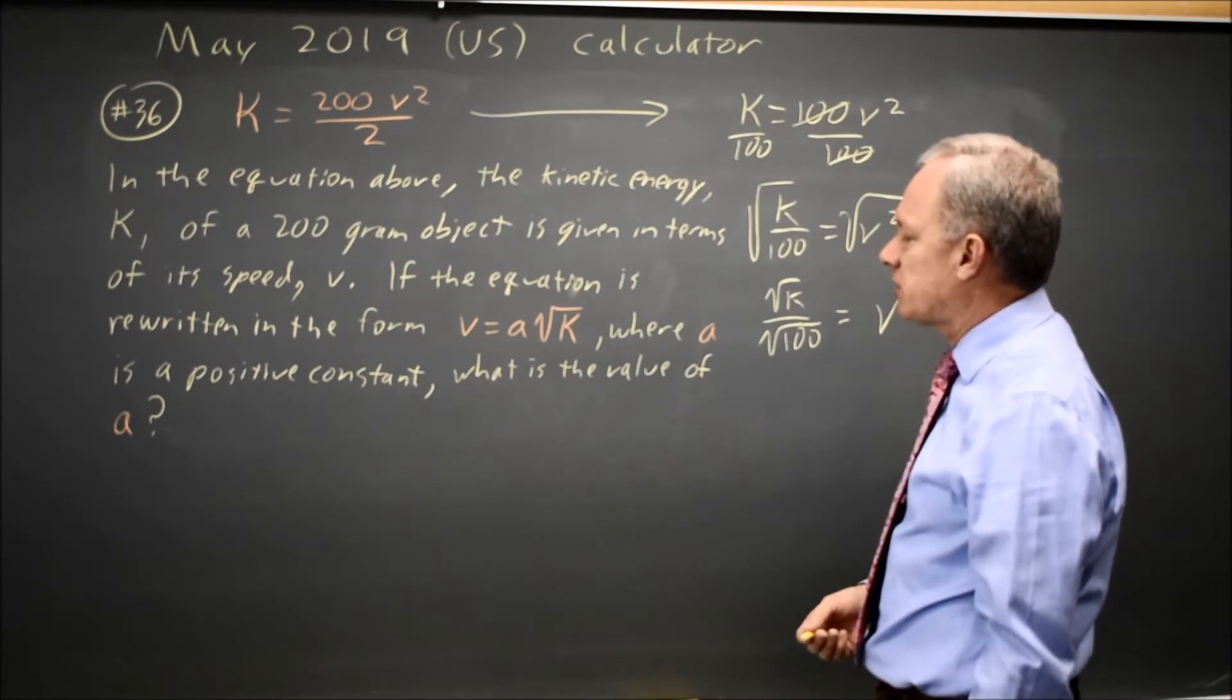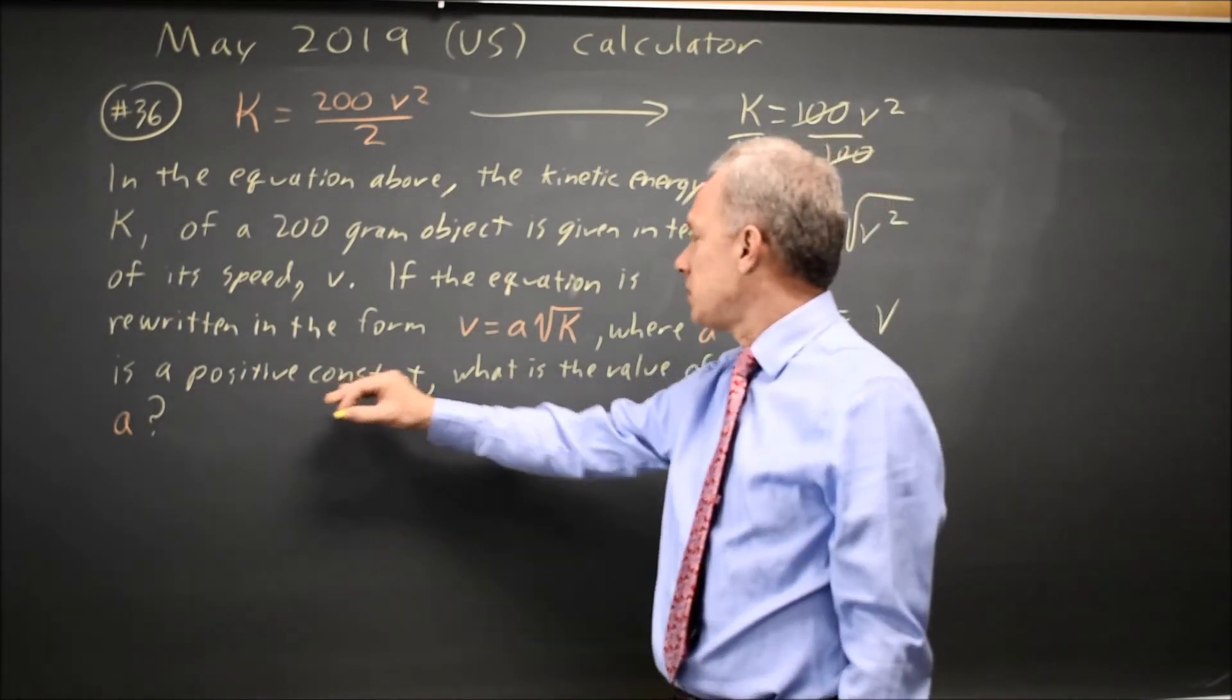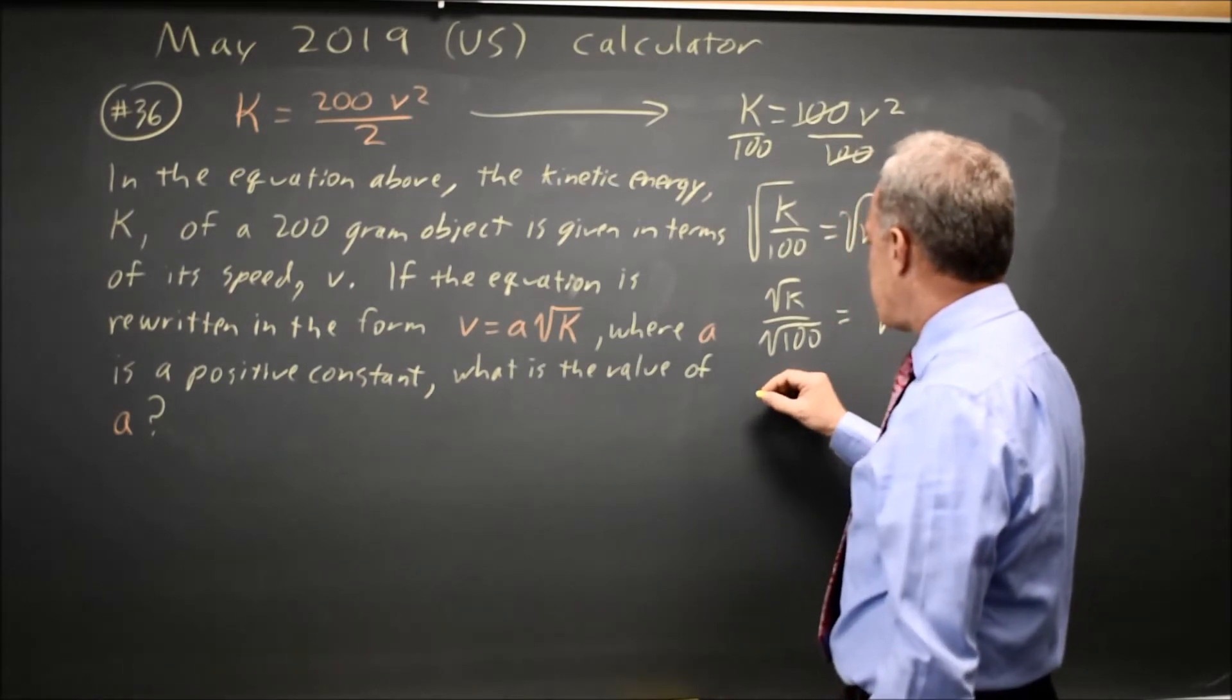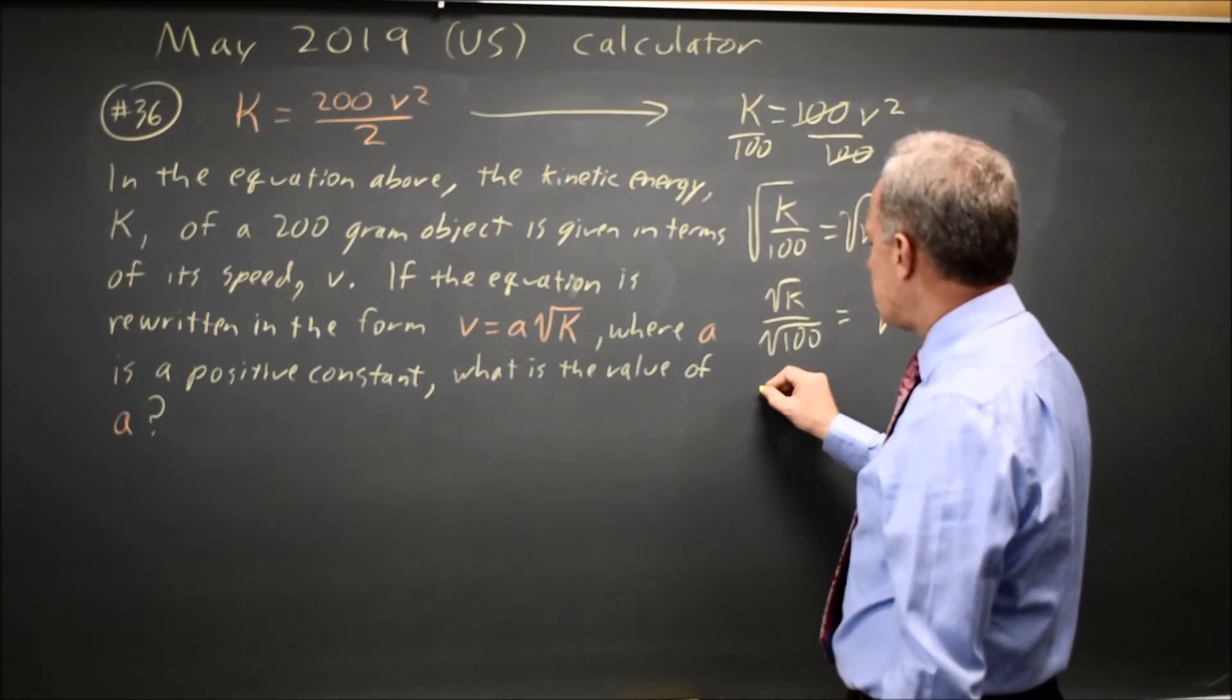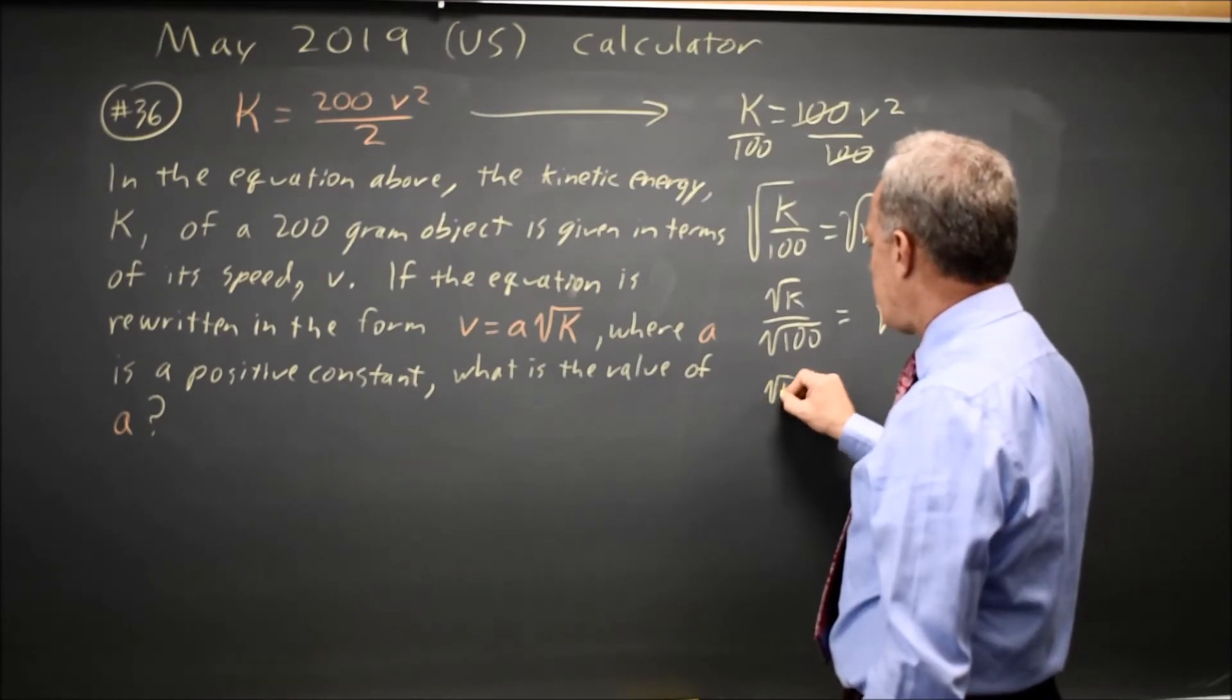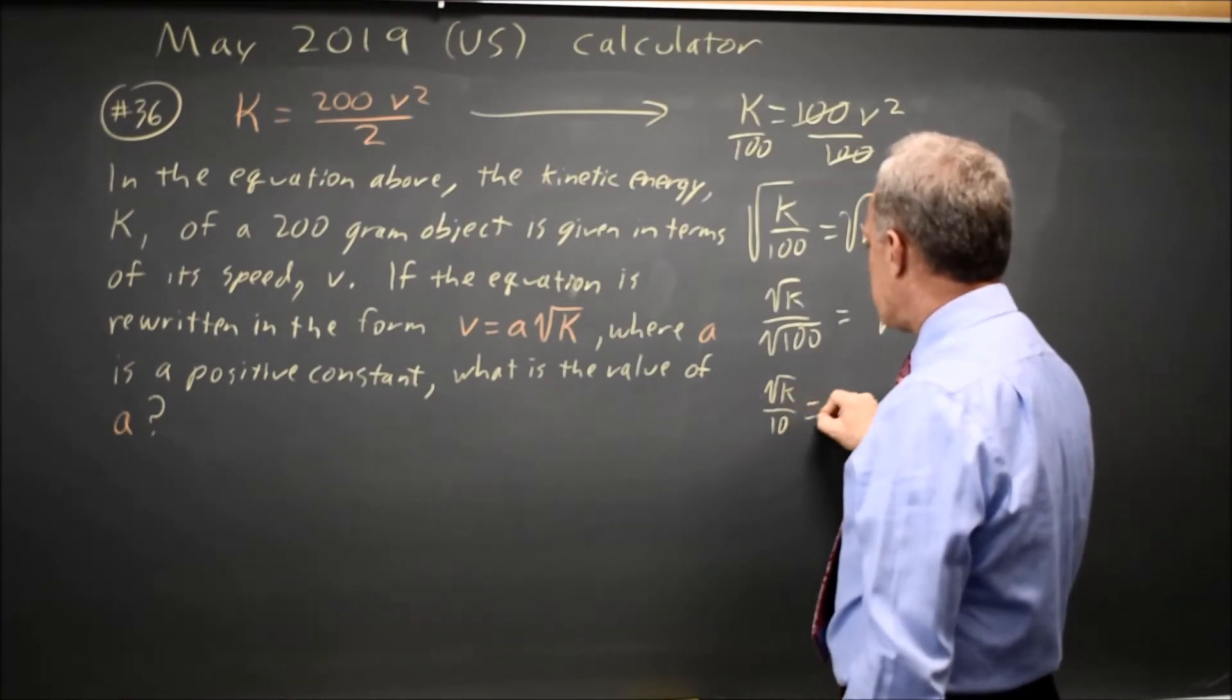Although since I can't grid in a negative and they say A is a positive constant, we don't have to worry about the negative whether or not we look at it that way. So I have root K over 10 equals V.